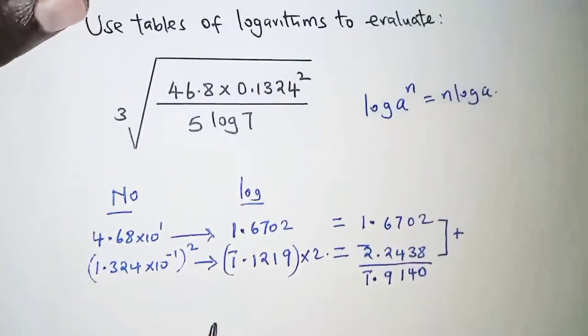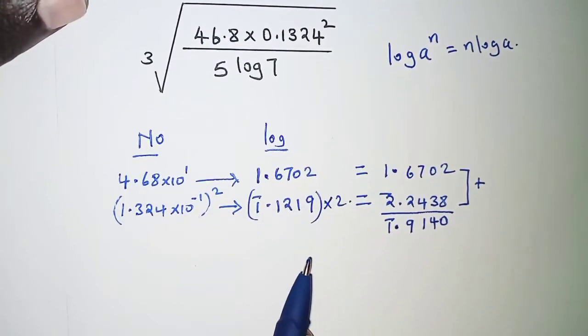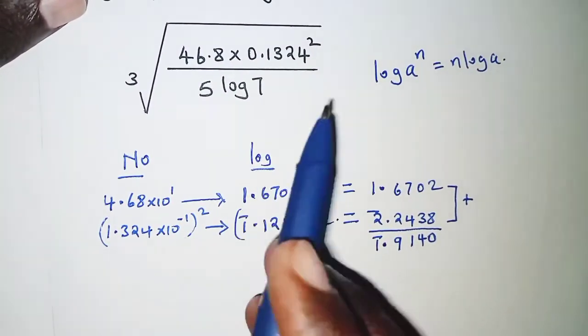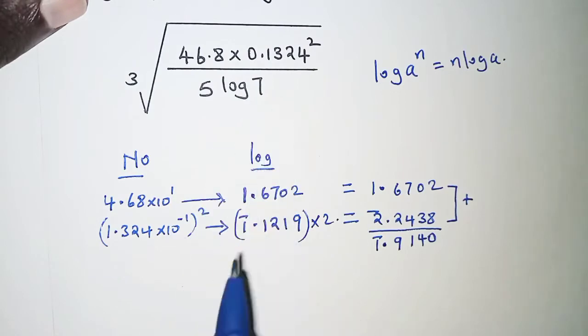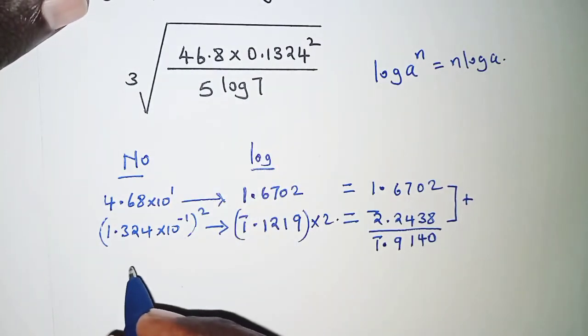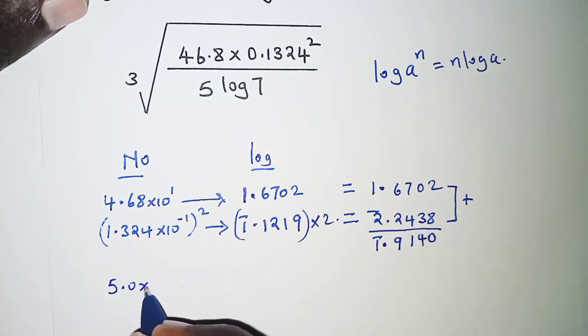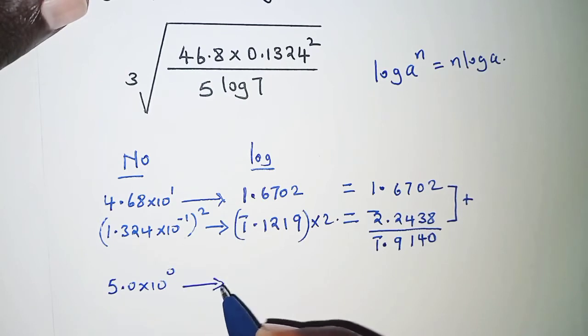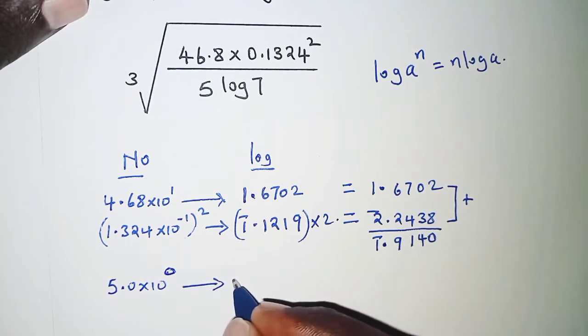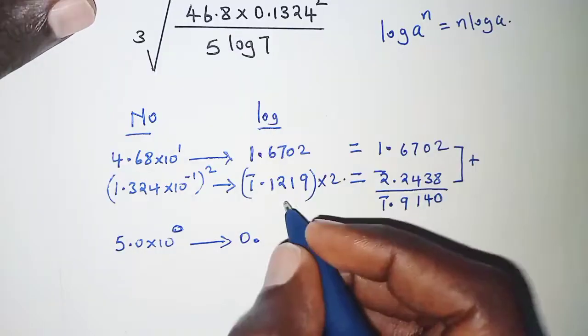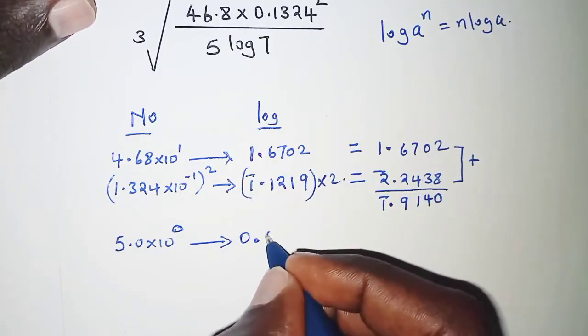Once we are done with the numerator, we move to the denominator. On the denominator we have 5 times log 7. We begin by having 5 in standard form. The characteristic is the power of 10, which is 0, and then we get logarithm of 5.0 from tables, which is 0.6990.